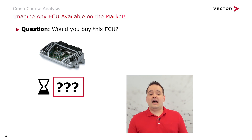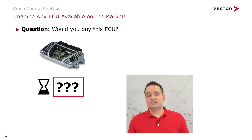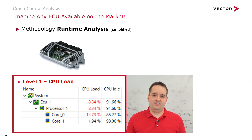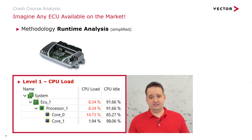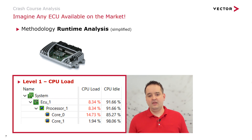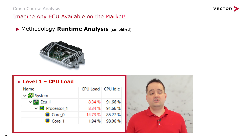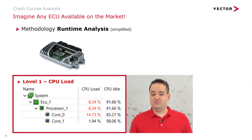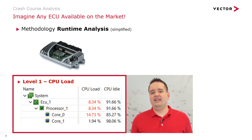The runtime on this ECU is unknown to you. Would you buy this kind of ECU? No. So let's apply the same kind of analysis but this time with a scope and focus on runtime. For level 1 analysis, we investigate the CPU load. Together with the Timing Architects tool suite, we are able to tell you: this ECU is a dual core system — it has 14% CPU load on core 0 and core 1 runs at almost 2%. Let's get one level deeper.